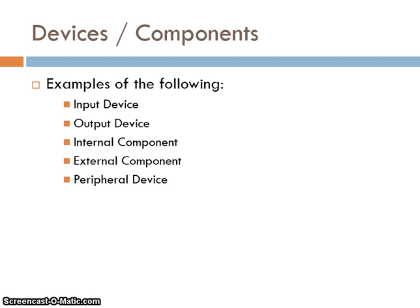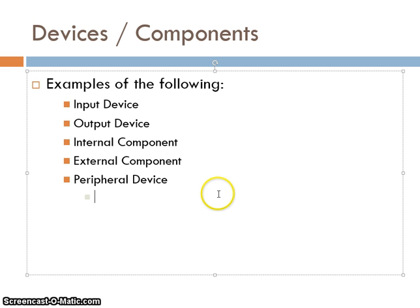Internal components are the components actually within the computer system. If you were to open up the tower case, you would find things like a processor, a RAM stick, and a motherboard. External components are anything external to the computer that is usually plugged in, such as an external hard disk drive. A peripheral device is a device not directly connected to the CPU — it is plugged into the computer and has bridging connections to get data to the central processing unit.